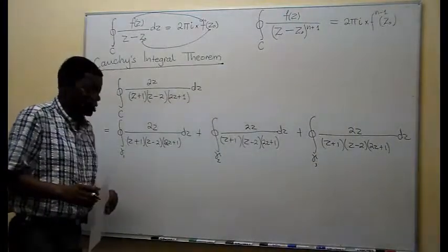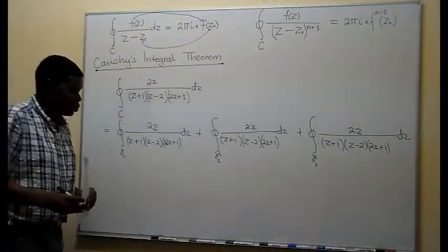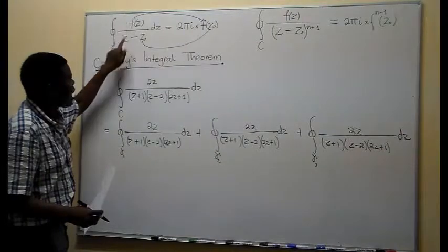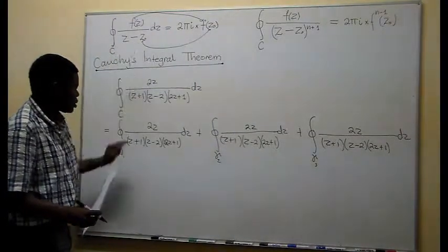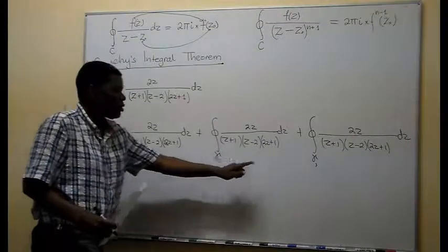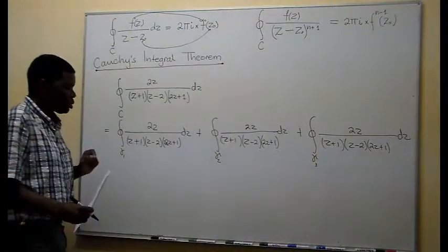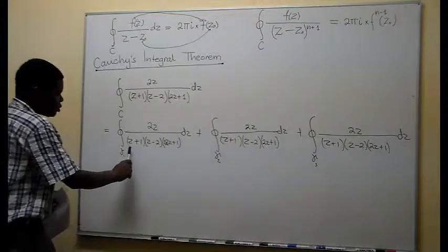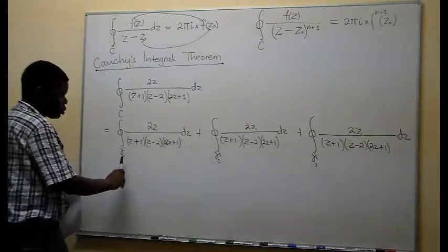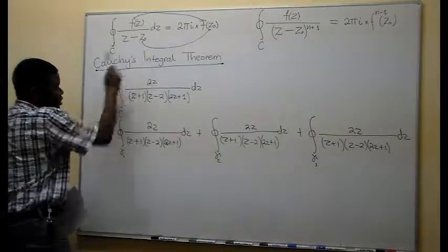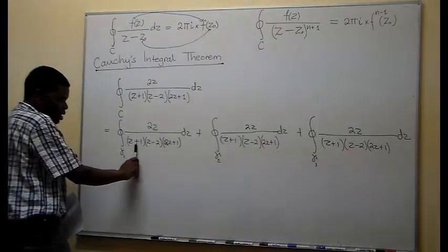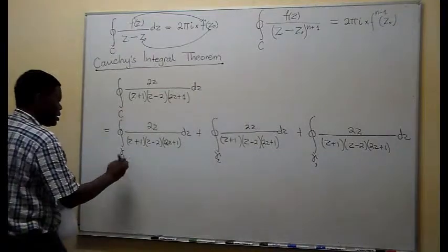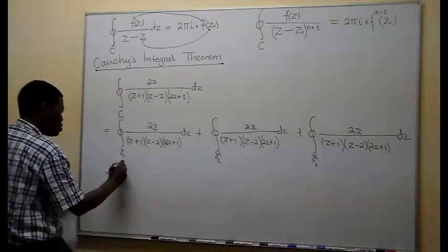I want you to pay very close attention to the manipulation I am going to do here. I want to isolate only one pole at a time, so each of these three paths will contain one pole. To create this situation, I will choose which pole I want to contain in each path and isolate it. In this case I'm going to choose the pole at minus 1 for the first factor.